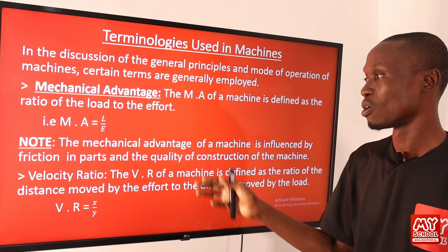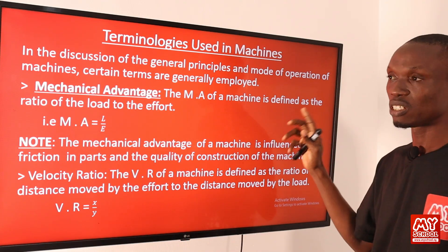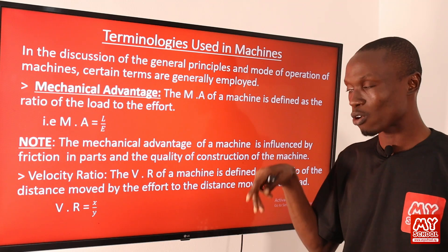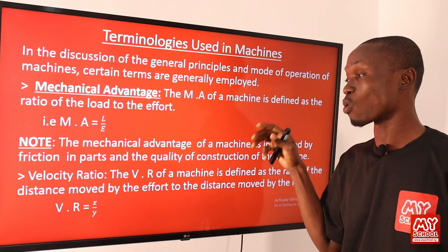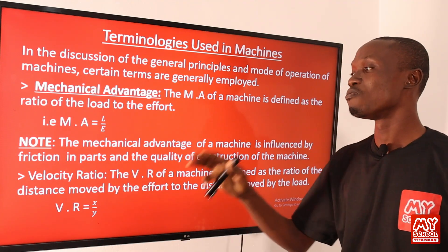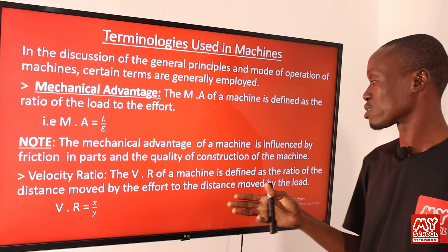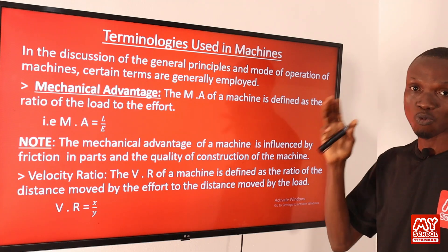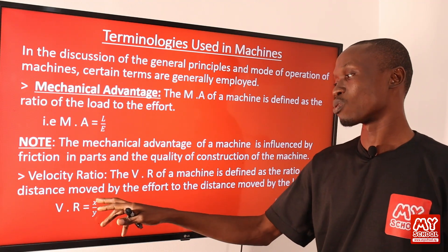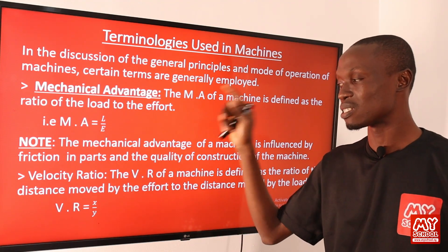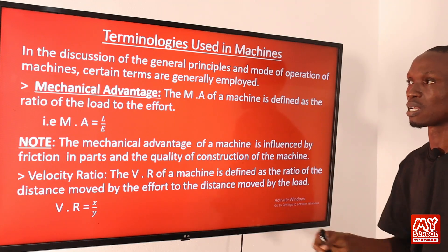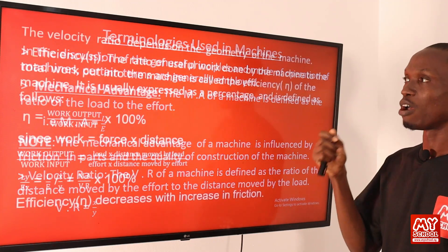Mechanical advantage is usually a ratio. Note that the mechanical advantage of a machine is influenced by friction in its parts, and the quality of construction also affects it. The next term is velocity ratio, defined as the ratio of the distance moved by the effort to the distance moved by the load. Velocity ratio equals x over y, where x is the distance moved by effort and y is the distance moved by load.